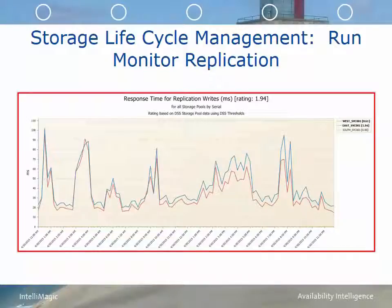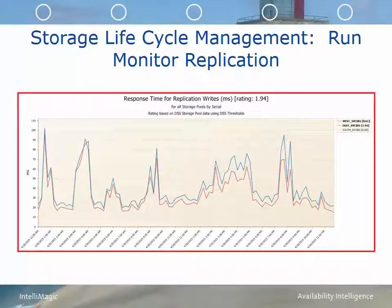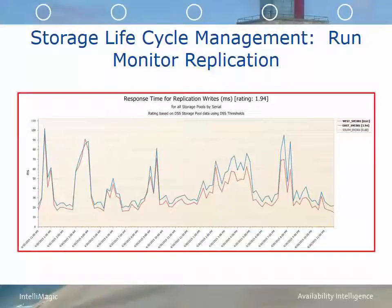Another important area during the run phase is to monitor replication activity proactively and provide alerts when replication is exceeding your desired targets. Typically this is done reactively when replication is having problems or impacting front-end response time, but it's much better to monitor replication write response time proactively and set reasonable thresholds. This is an example of asynchronous replication for a set of SVCs — you can see that the response times are fairly high and the chart has been rated red. These kinds of thresholds should be set up for alerting when the desired SLOs are exceeded.